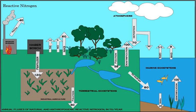Anaerobic ammonia oxidation: In this biological process, nitrite and ammonia are converted directly into molecular nitrogen (N2). This process makes up a major proportion of nitrogen conversion in the oceans. The balanced chemical reaction is: NH4+ + NO2- → N2 + 2H2O, with ΔG° = −357 kJ mol⁻¹.